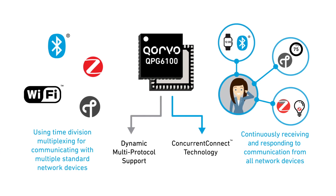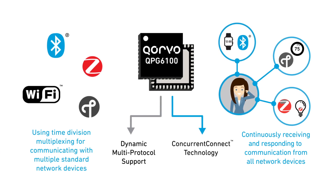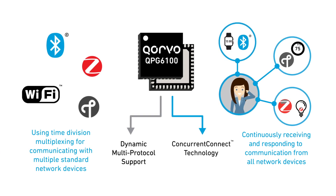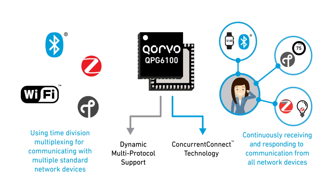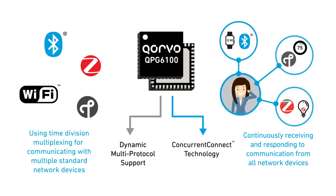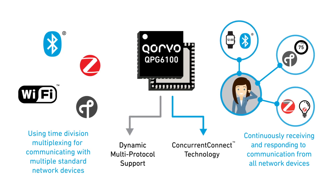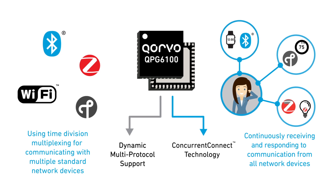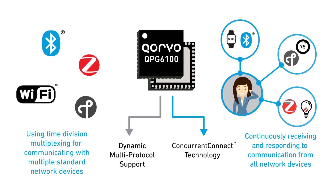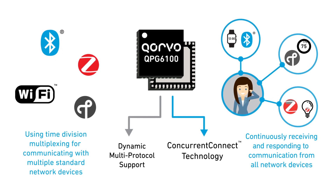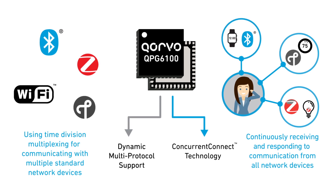Corvo's Concurrent Connect technology in the QPG6100 takes multi-standard to a new level. It allows the QPG6100 to communicate to all devices seamlessly and continuously, no matter which standard they are using or which ecosystem they belong to.